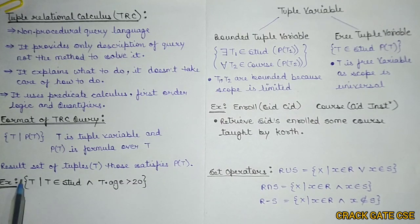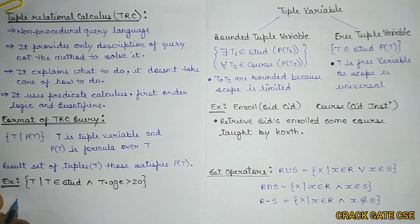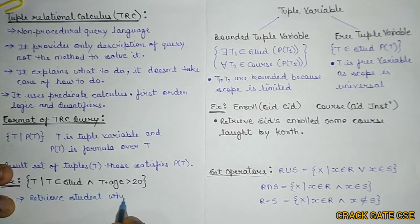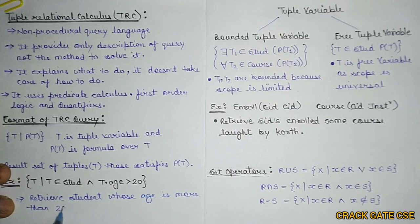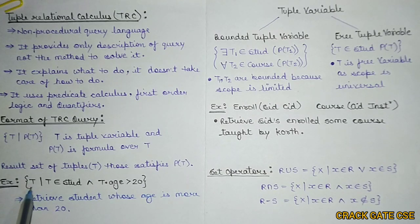Now see this example. I have an example where T belongs to student — 'stud' is nothing but student — and T dot age is greater than some quantity. What is the meaning of this particular thing? The statement would be: retrieve students whose age is more than 20. So this is just a description. As already discussed, TRC provides the description only. So how we can write 'retrieve the student whose age is greater than 20' — we simply convert it into the statement form.